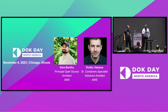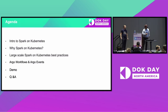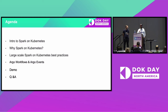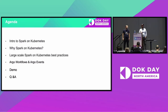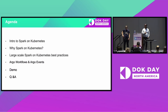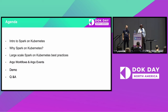Without further ado, let's get started. Just a quick agenda: I'll give you an introduction to Spark on Kubernetes, then we'll move on to why customers want to run Spark on Kubernetes, and discuss some of the best practices for running Spark on Kubernetes. When it comes to running large-scale Spark on Kubernetes, what kind of considerations and best practices you need before deploying workloads onto Kubernetes — we'll touch upon those.